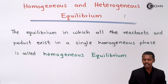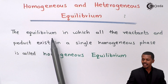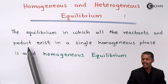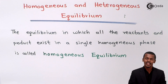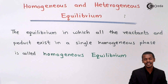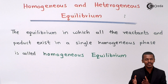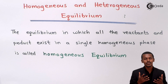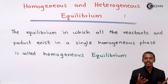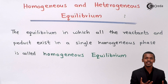So what is homogeneous equilibrium? The equilibrium in which all the reactants and the products exist in a single homogeneous phase is called homogeneous equilibrium. This is very similar to homogeneous reactions discussed in an earlier lecture, where reactants and products both have the same or a single phase — that is, the same state.